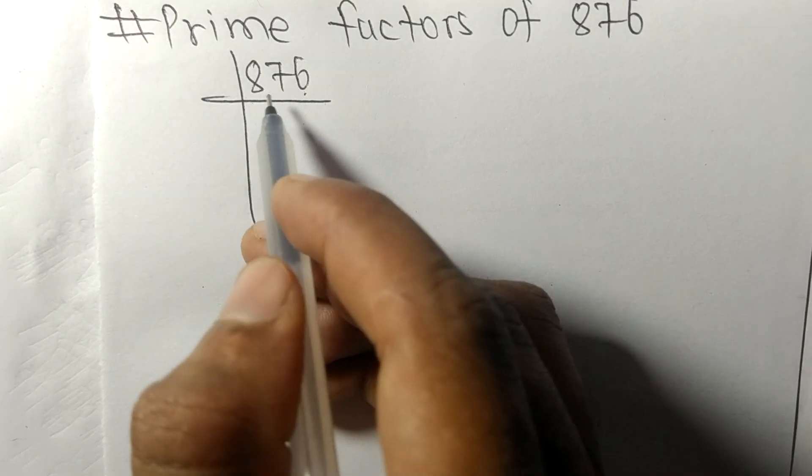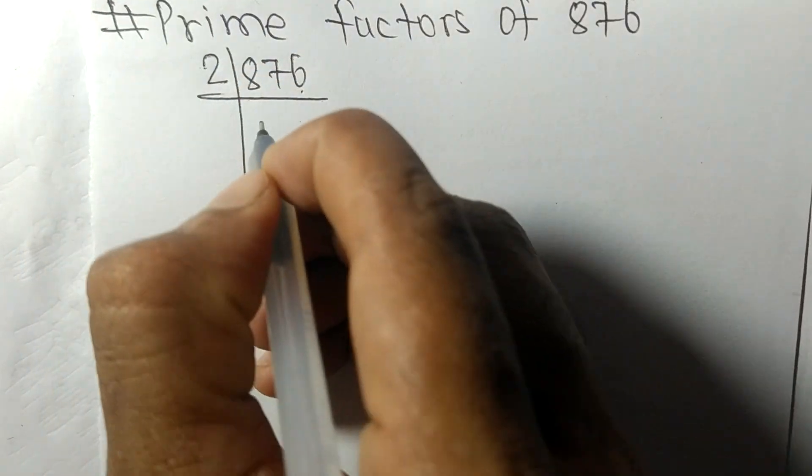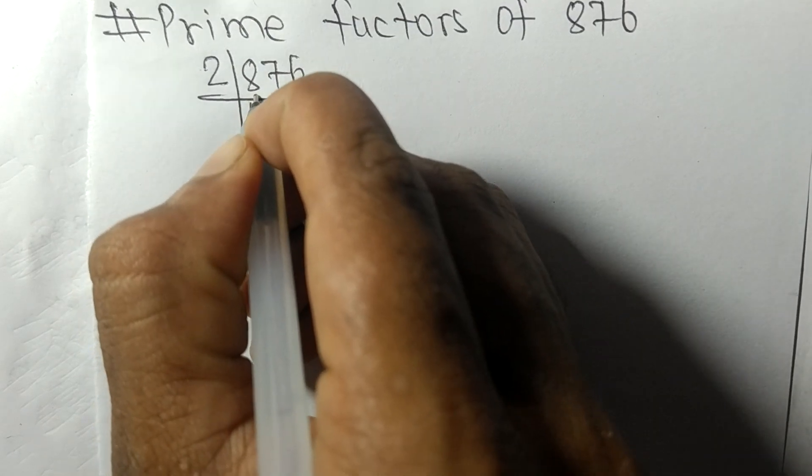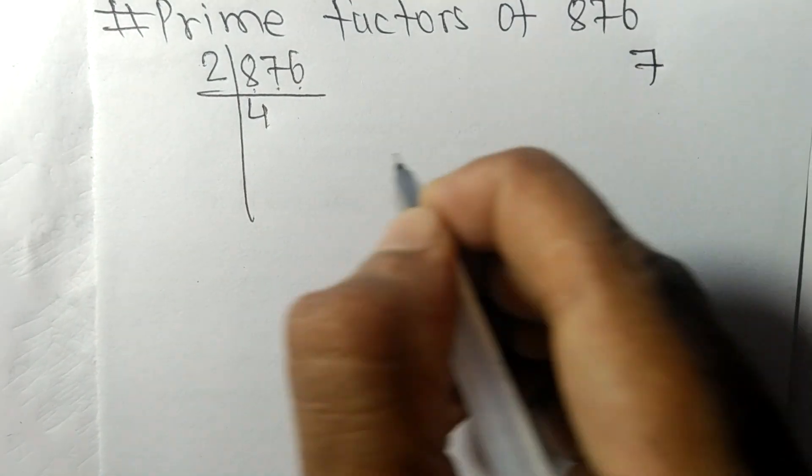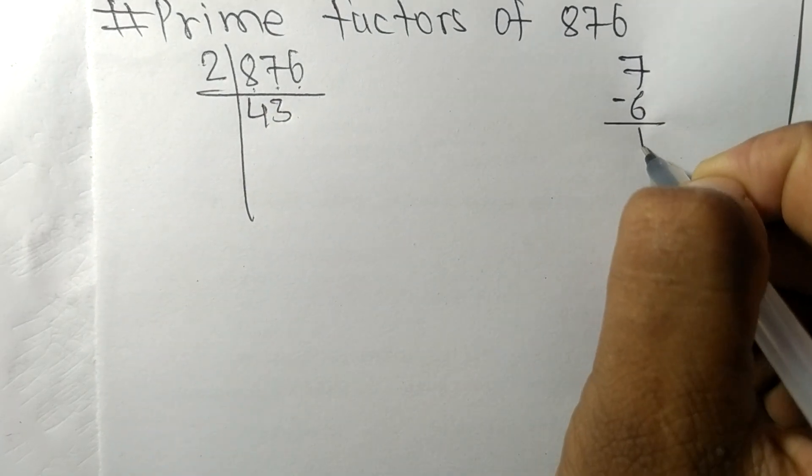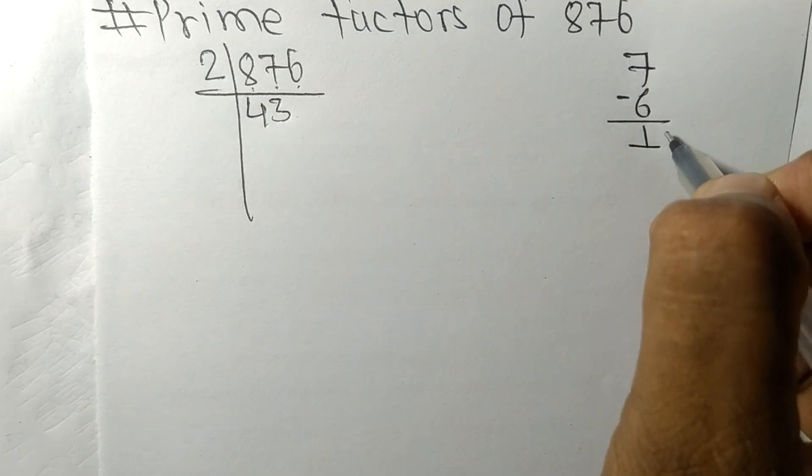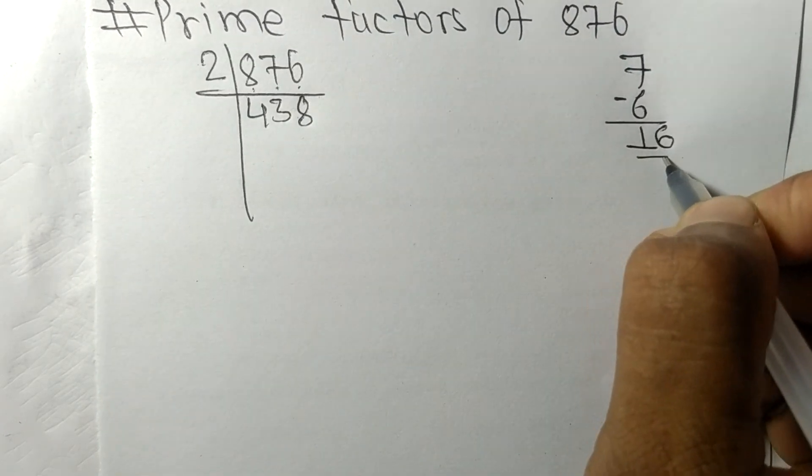Two times four is eight. Now we have seven, so two times three is six. On subtracting we get one, and this is sixteen. Two times eight is sixteen.